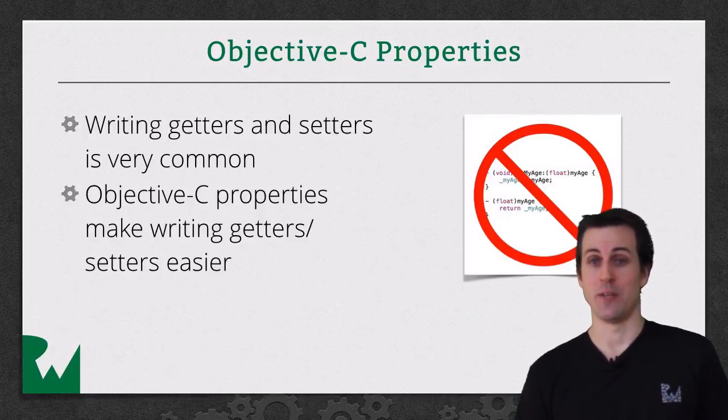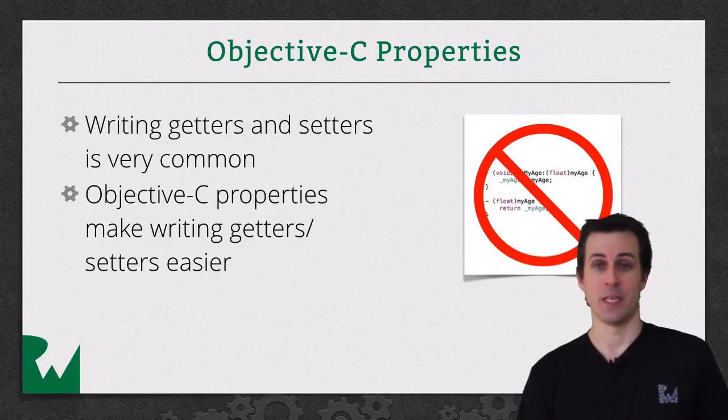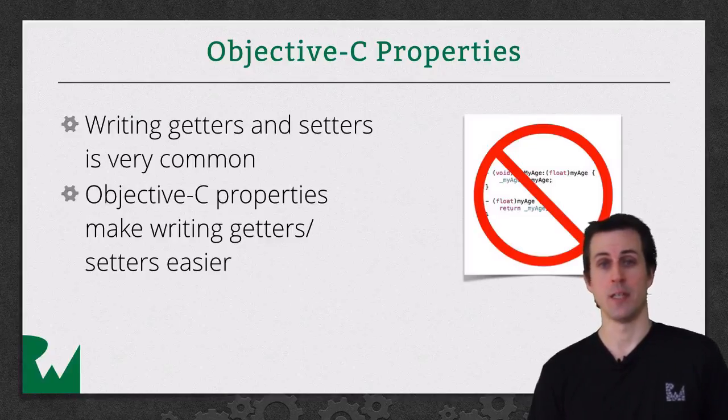So in Objective-C, there's this thing called properties, and they're awesome because you make a property and it automatically creates getters and setters for you based on your specifications. Let's take a deeper look.